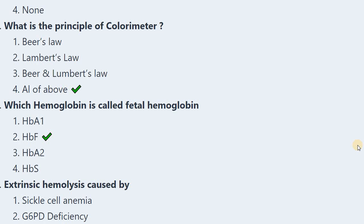Next question: Which hemoglobin is called fetal hemoglobin? Options: HbA1, HbF, HbA2, HbS. The answer is HbF, which is called fetal hemoglobin. HbA1C is used for blood glucose monitoring, and HbS is associated with sickling.